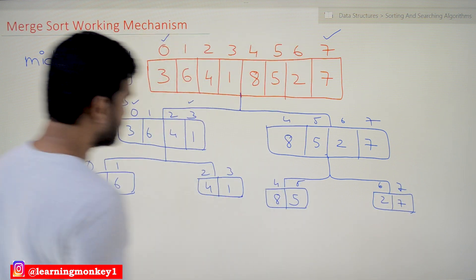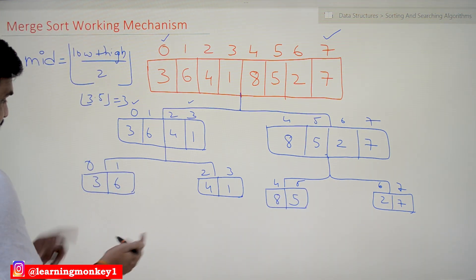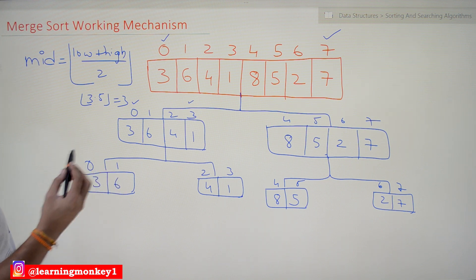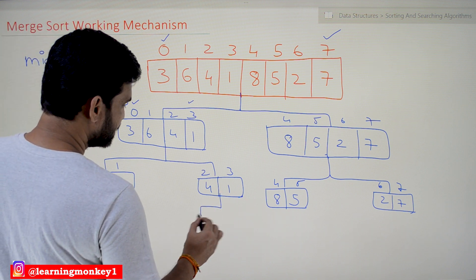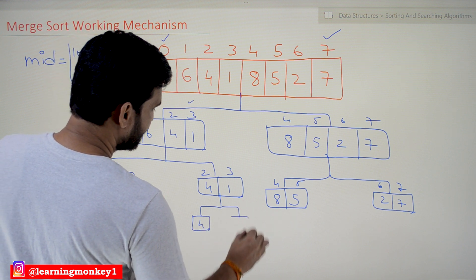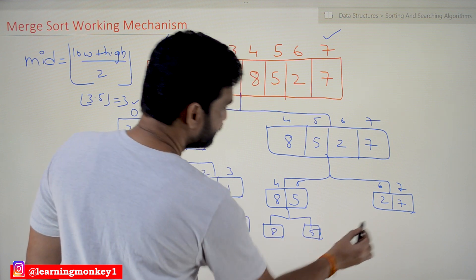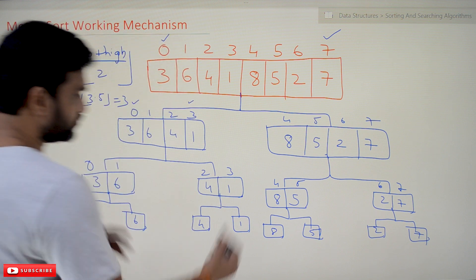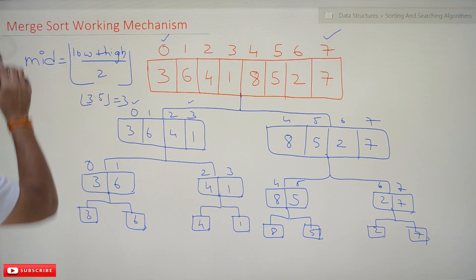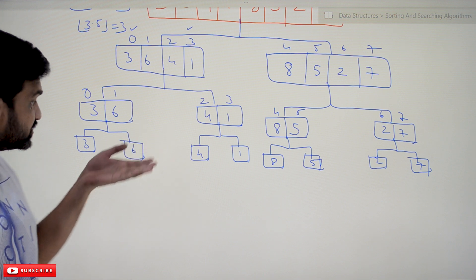Can these sub-arrays be further divided? Yes, they can be divided into two pieces each. For example: (0 + 1) / 2 = 0.5, floor value is 0. So we get individual elements: 3, 6, 4, 1, 8, 5, 2, and 7 as single-element sub-arrays. At this point the division stops, as single elements cannot be divided further.